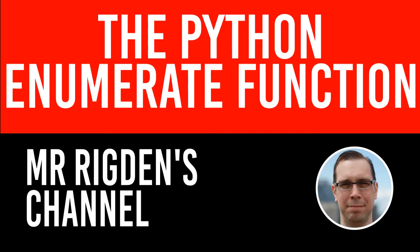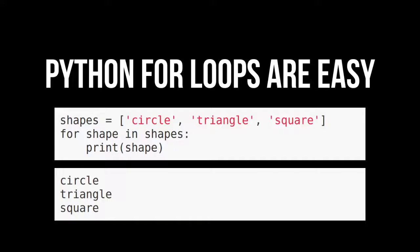In this video, we're going to be talking about the Python enumerate function. Python for loops are super easy, so we're just going to make a list here of shapes with a circle, triangle, and square, and then we're going to iterate over it — that does what you would expect.